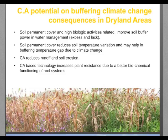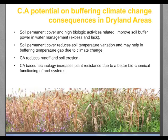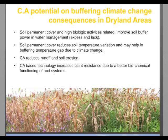Climate change effects may be buffered by CA in different ways. First, permanent soil cover and high biological activity may improve the soil's buffer capacity for water management. Also, permanent soil cover may reduce soil temperature variation — meaning that in dryland areas, the typical extreme soil temperature variation will be reduced where soil cover is present. CA may also reduce run-off and soil erosion, and CA-based technology may increase specific plant resistance, improving the plant's ability to resist climatic variations.